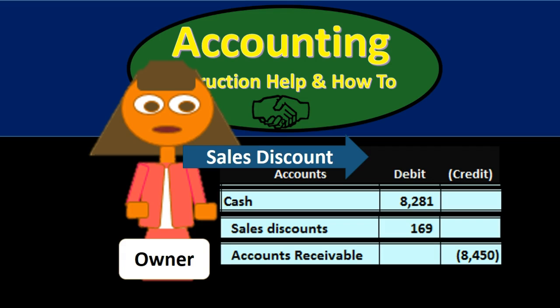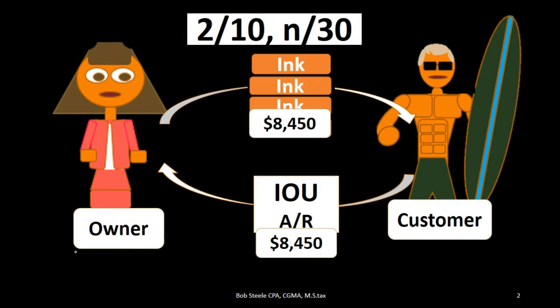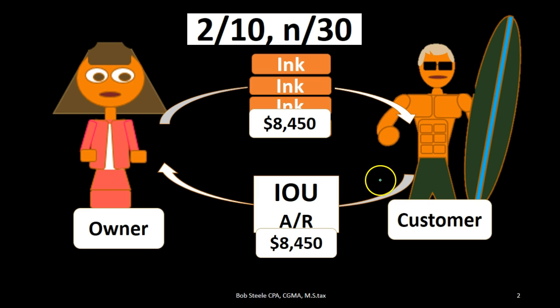In this lecture we're going to record the journal entry related to a sales discount. The owner is going to provide a sales discount to the customer. First we want to look at the original transaction — the owner selling inventory, in this case ink, to the customer. The customer has not yet paid for it; they're going to pay with an IOU. The sales price is $8,450.